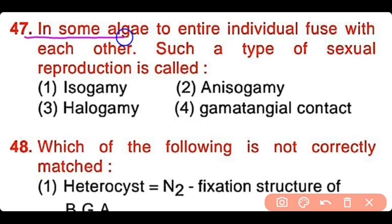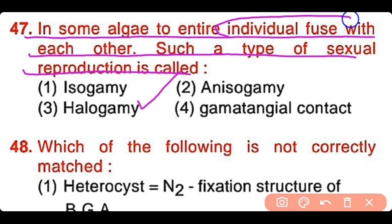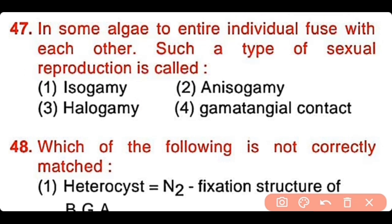Question number 47: In some algae, entire individuals fuse with each other. Such type of sexual reproduction is called isogamy, anisogamy, hologamy, or gametangial contact? The correct answer is option 3. In hologamy, the entire individuals are fused with each other.